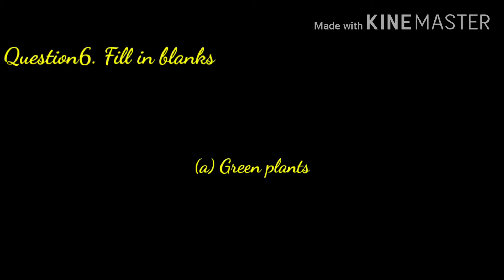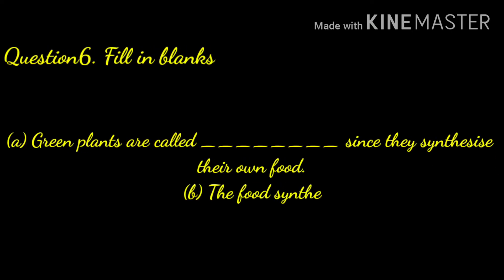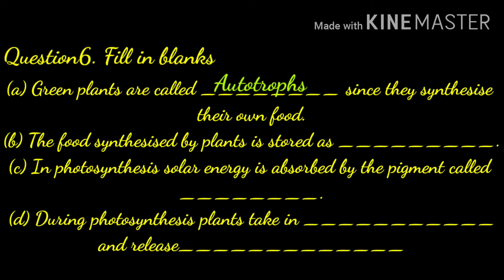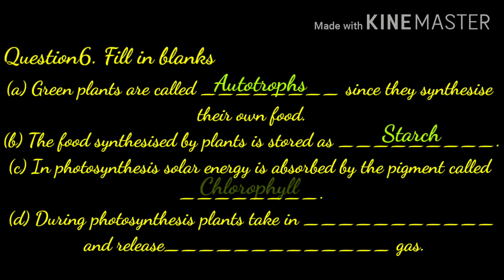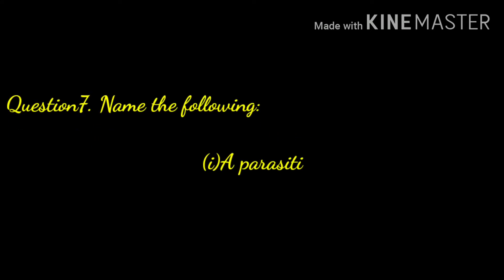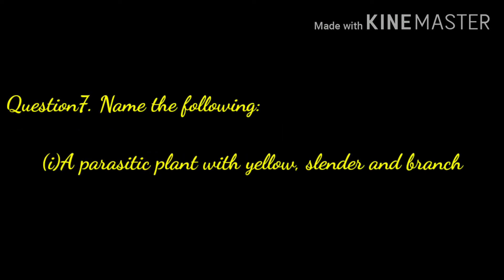Question number six: fill in the blanks. Green plants are called — answer: autotrophs — since they synthesize their own food. The food synthesized by plants is stored as — answer: starch. In photosynthesis, solar energy is absorbed by the pigment called chlorophyll. During photosynthesis, plants take in — carbon dioxide — and release — oxygen — gas.